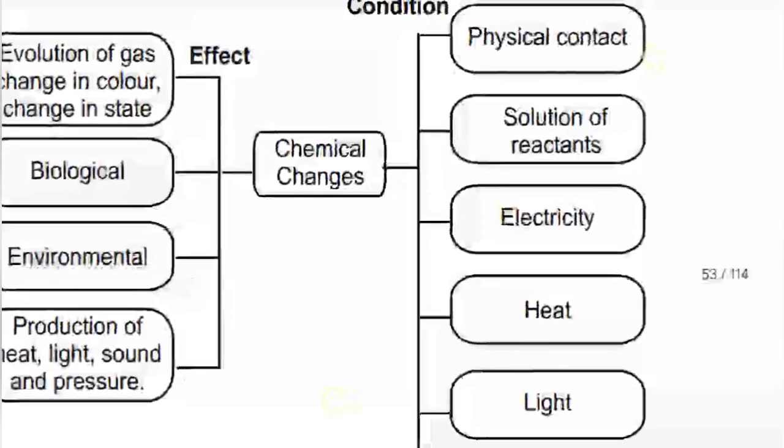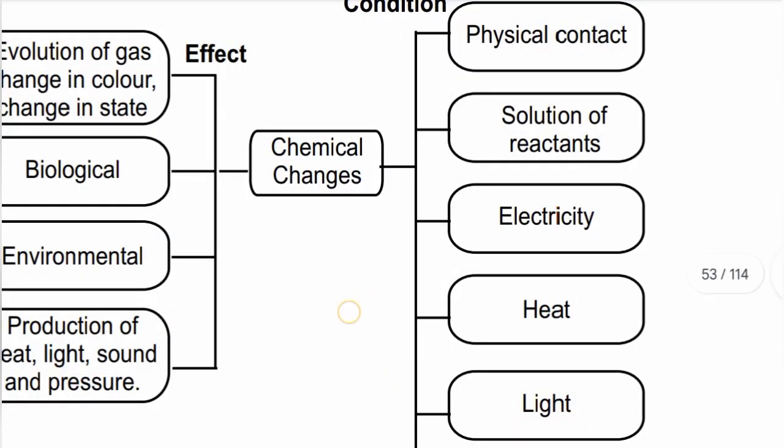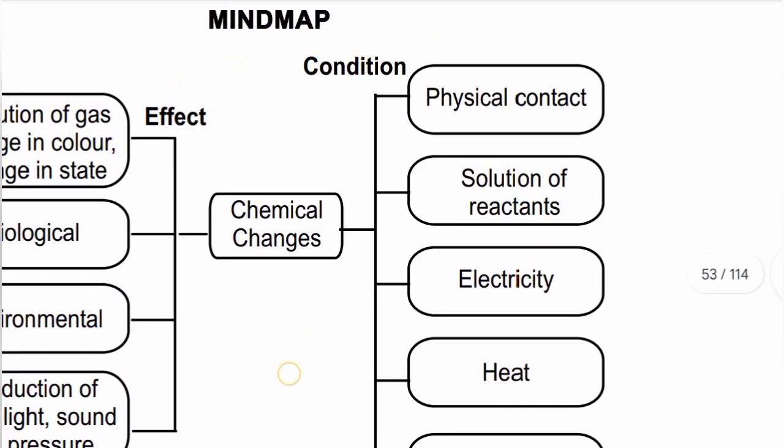What changes? Physical contact. Contacts in physical states. What changes? Chemical changes — conditions. Now, we have a matchstick. Matchbox side rub. A chemical reaction forms.